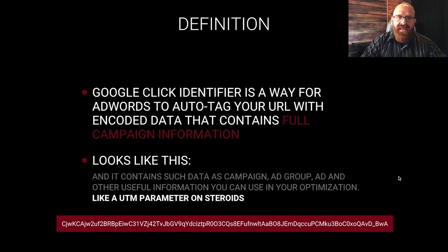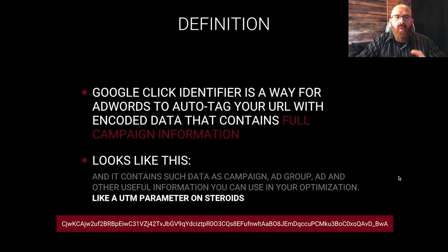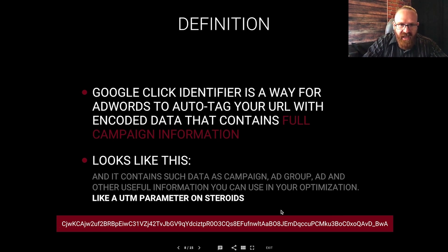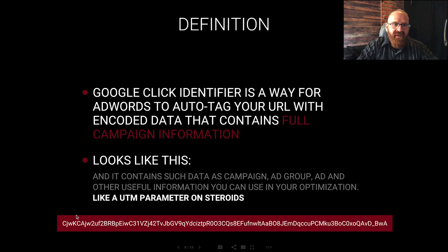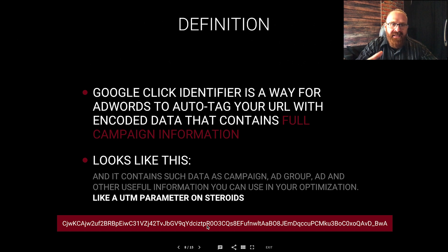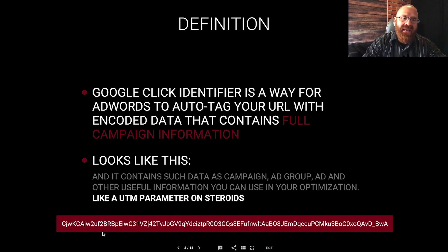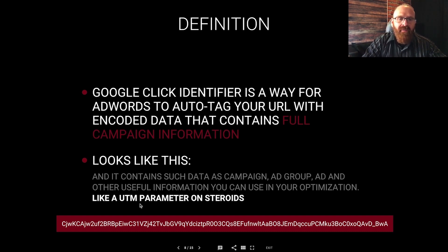What is a GclickID? Essentially, Google Click Identifier is just a way for AdWords to auto-tag your URL with some encoded data that contains full campaign information. It looks like a big long string of numbers and letters. It has all the information that a UTM would have in one shot, as well as additional things UTMs don't have — like session identification. This number is unique to each session that the lead does. It's really valuable because you can get more information from it automatically just by importing this data back into AdWords directly. UTMs just identify where traffic came from, but a GclickID is like a UTM on steroids — and that's why we use it.